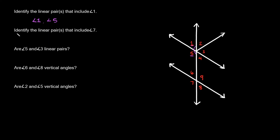Next: identify the linear pair or pairs that includes angle 7. Here's angle 7. The linear pairs would be 7 and 8 — they're next to each other and form a straight angle of 180 degrees. And 7 and 6 are also linear pairs because they're next to each other and also form a straight angle. So angle 6 and angle 7 are a linear pair, and angle 8 and angle 7 are also a linear pair.